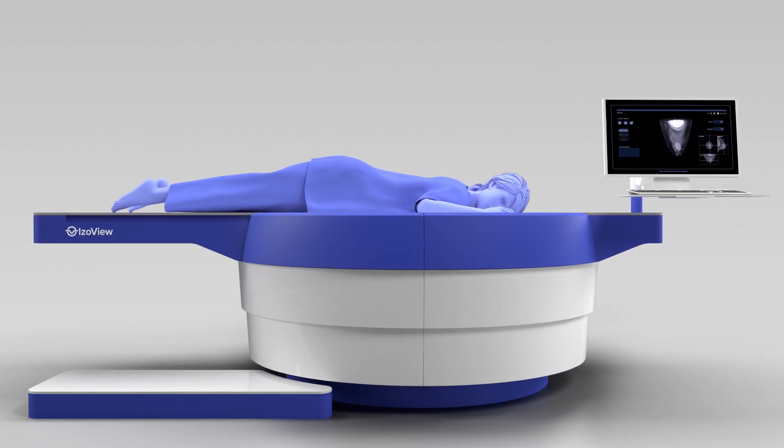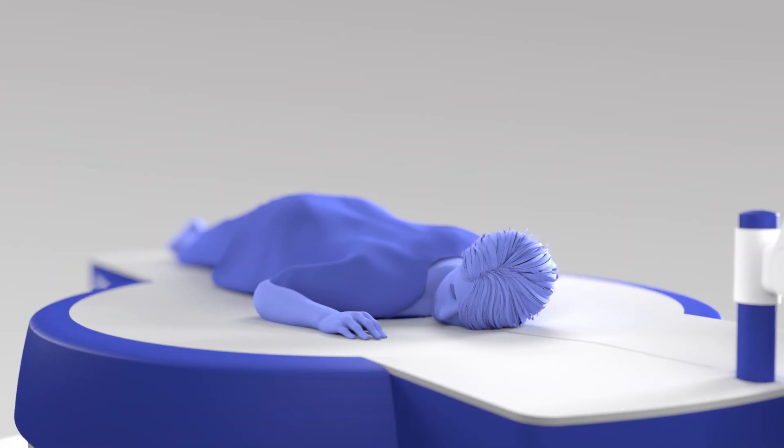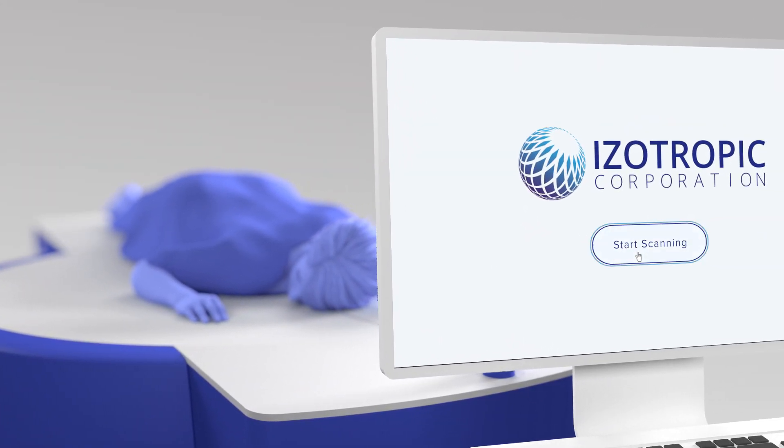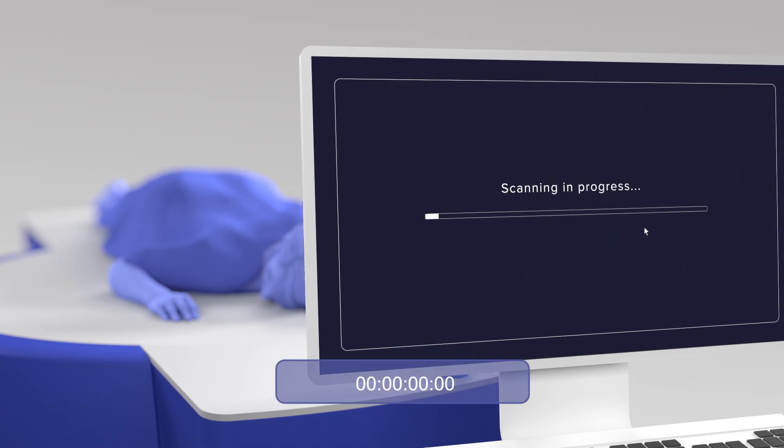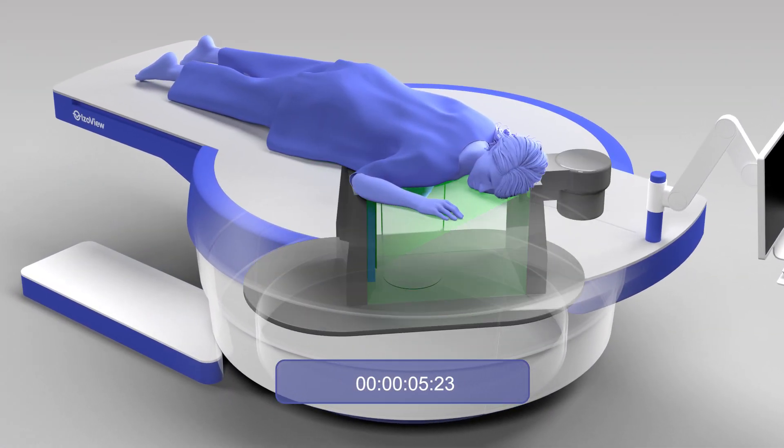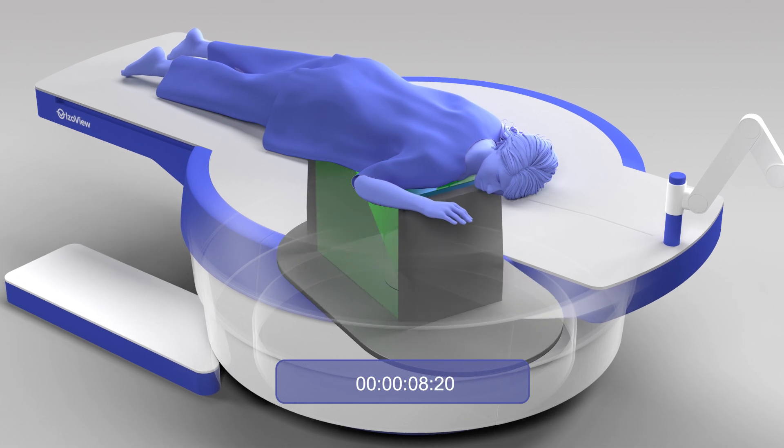The controls are simple, relying on a few easy clicks by the technician to start the imaging process. Scanning is rapid, with Isoview capturing 400 to 500 CT images in just 10 seconds.